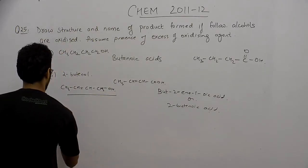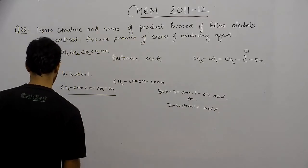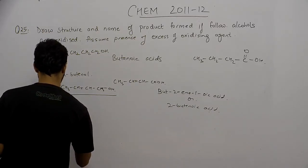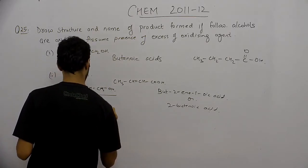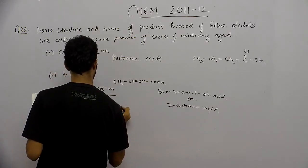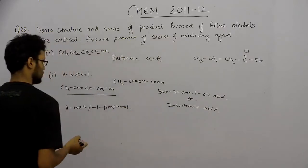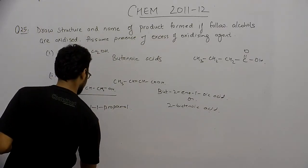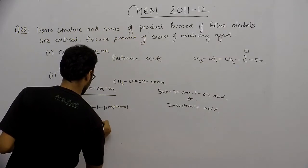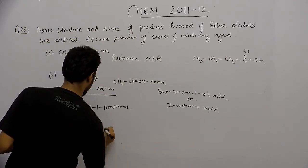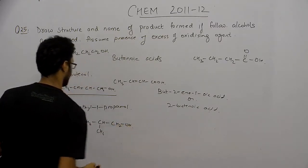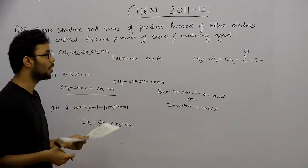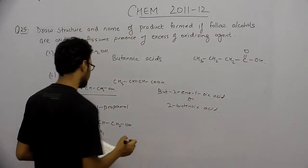The third alcohol is 2-methyl-1-propanol. On oxidizing this alcohol, we get the corresponding carboxylic acid product. The alcohol group is converted into a carboxylic group on oxidation, and the double bond is not affected — it remains the same.